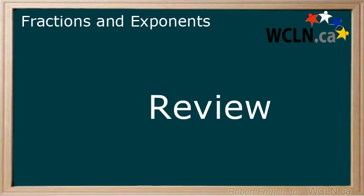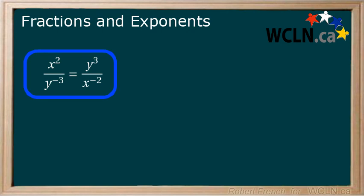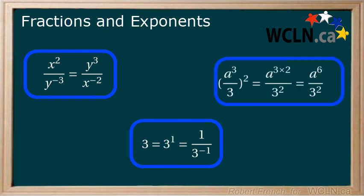In this lesson, you learned that you can move numbers and variables over the fraction line by changing the sign of their exponent. Numbers and variables without an exponent can be raised to the power of 1 and then moved over the fraction line by changing the 1 to a negative 1. Finally, you learned that when a fraction is raised to an exponent, the power of a power rule is applied to all of the numbers and variables within them.